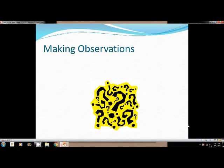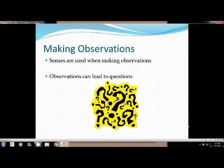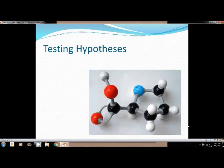The first step is making observations. We do this all the time. Senses that we have are used when making observations. How does it smell? How does it taste? What does it look like? Can you feel it? Is it rough or is it smooth? All of these observations that we use our senses for can then lead to questions. They help us develop questions like, why does that happen? How can that happen? What can this be made out of?